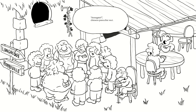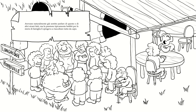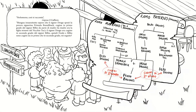Gli Hobbit gentili come il signor Frodo è difficile incontrarli; somiglia moltissimo al signor Bilbo, e non soltanto fisicamente. Dopo tutto, suo padre Aaron Baggins - che persona onesta e rispettabile, il signor Drogo Baggins, non ci fu mai niente da dire sul suo conto - fin quando non annegò. Annegato? chiesero parecchie voci. Avevano naturalmente già sentito parlare di questo. Bisogna innanzitutto sapere che il signor Drogo sposò la povera signorina Primula Brandybuck, cugina in primo grado del signor Bilbo da parte di madre. Il signor Drogo era cugino in secondo grado del signor Bilbo; quindi Frodo e Bilbo sono cugini sia in primo che in secondo grado.